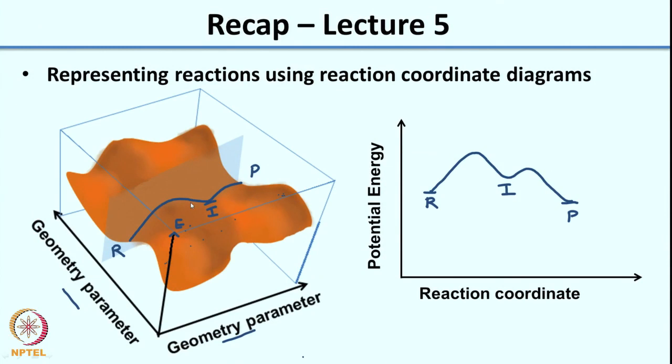Now the surface looks pretty complicated, but to simplify it, we use what is called a reaction coordinate, which is the cross section of a potential energy surface. In the reaction coordinate diagram, the y-axis corresponds to the potential energy and the x-axis corresponds to the reaction coordinate. The reaction coordinate is essentially a geometry parameter which indicates the change in the bonding of the molecules — so it could be associated with bond breaking and bond making. Essentially, the reaction coordinate is a geometry parameter and the y-axis is the energy parameter.